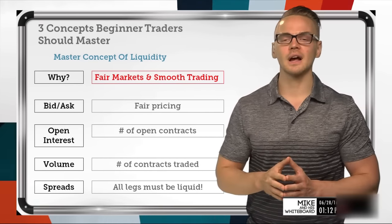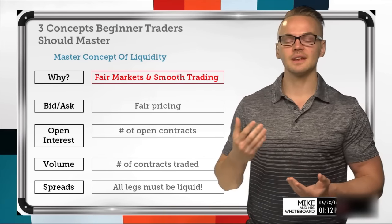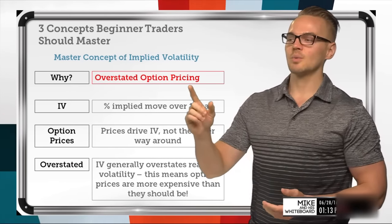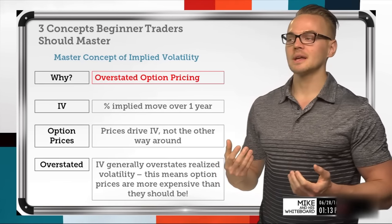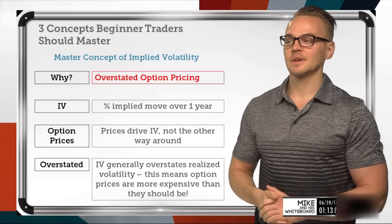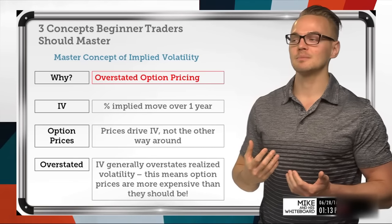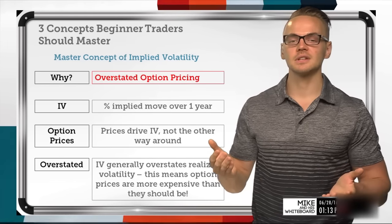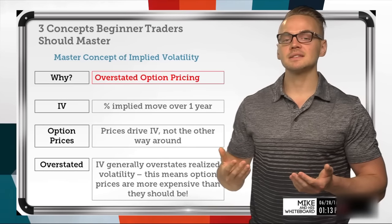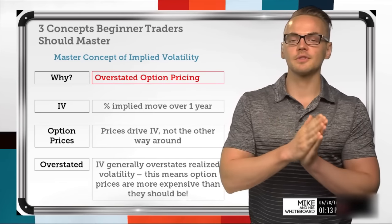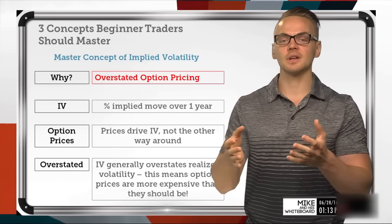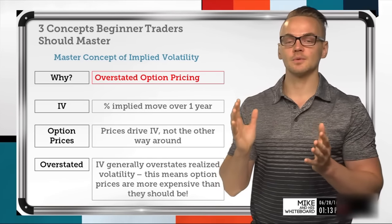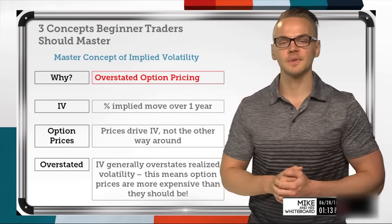One more concept to talk about today is implied volatility. Why would we want to master it? It's all about overstated option pricing. Implied volatility is really just the percentage implied move over the course of one year. So if I have an underlying trading at $100 with an implied volatility of 30, that basically means the underlying has the ability to go up 30% or down 30% over the course of the year — the underlying could go anywhere from $70 to $130 in that range.